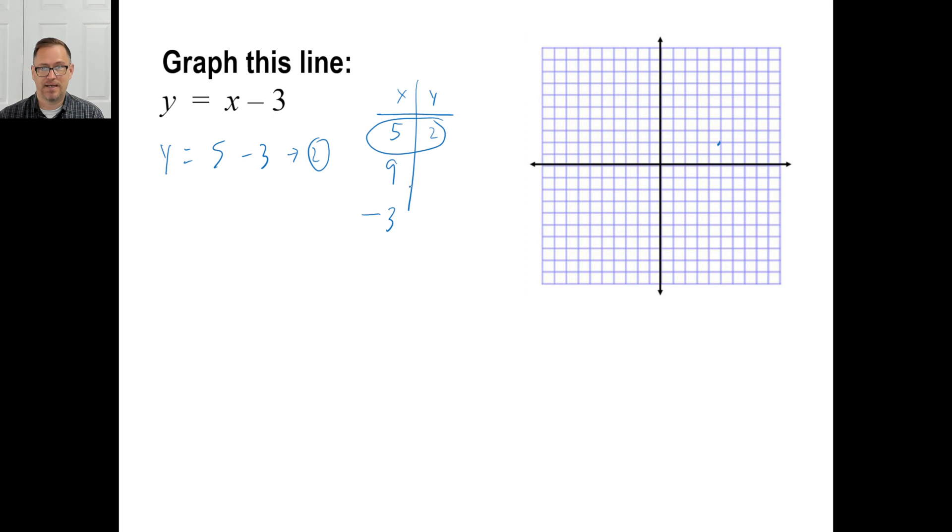Nine. You can probably do this in your head. If X is nine, Y is equal to nine minus three, which is six. So there's my other point. Nine, and then up six.